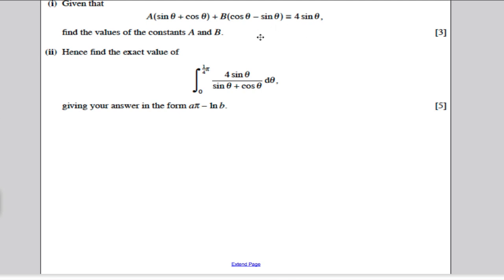Straight away, it tells you that the following identity holds true. It says that some number A times sine theta plus cos theta plus some number B multiplied by cos theta minus sine theta is identical to 4 sine theta. And it asks you to find A and B. We have a simple identity here.